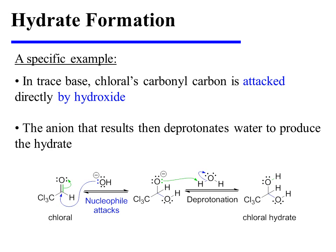On the other hand, in trace base, chloral's carbonyl carbon is directly attacked by hydroxide, and the carbonyl pi-bonding electrons are pushed onto oxygen as a result. The anion that forms then deprotonates water, and this produces chloral hydrate as well, but via a different mechanism.